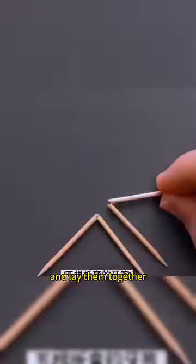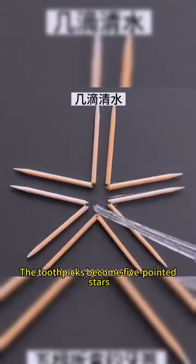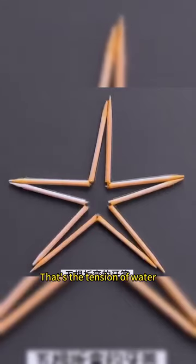Fold five toothpicks in half and lay them together. Put a few drops of water in the center. The toothpicks become five pointed stars. That's the tension of water.